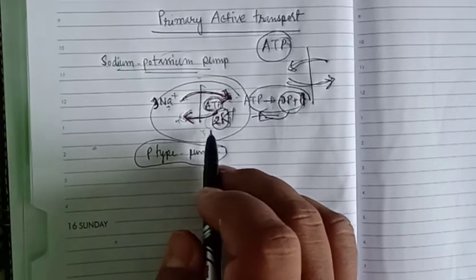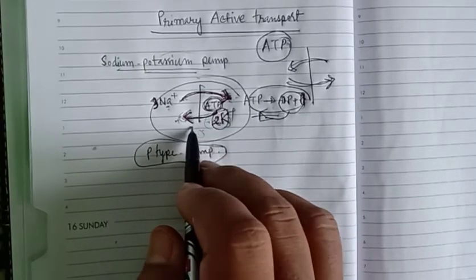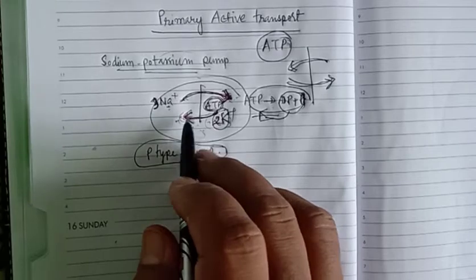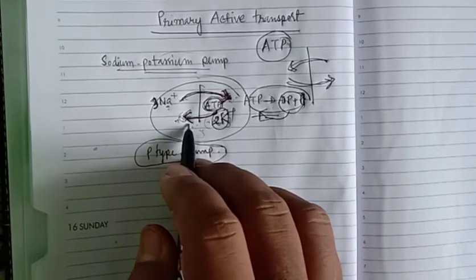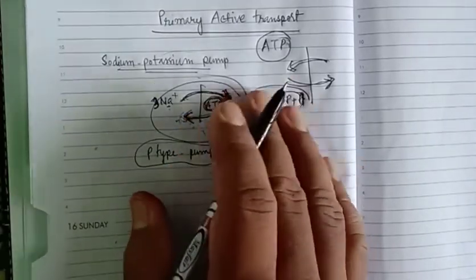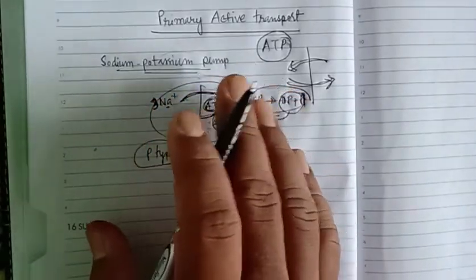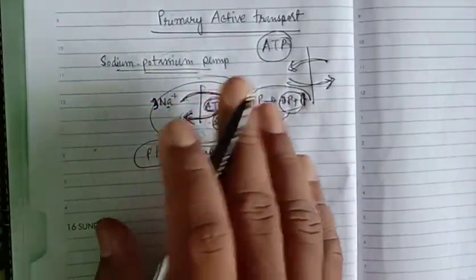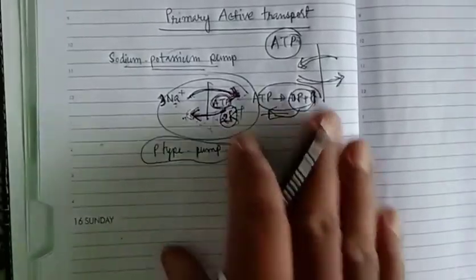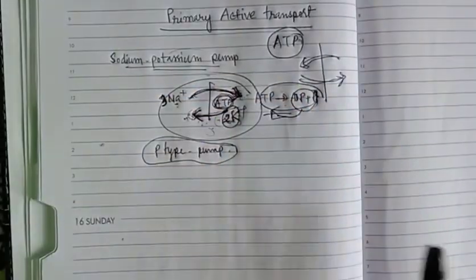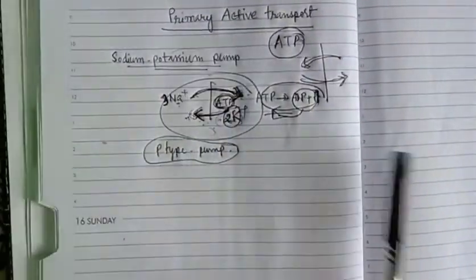The phosphorylation reverses, which again changes the shape of the pump, allowing potassium to enter the cell. This pump is important for overall nerve function and the benefit of the organism. This completes the mechanism of the sodium-potassium pump.